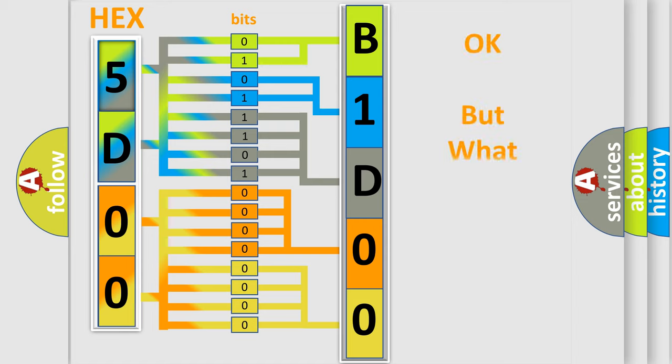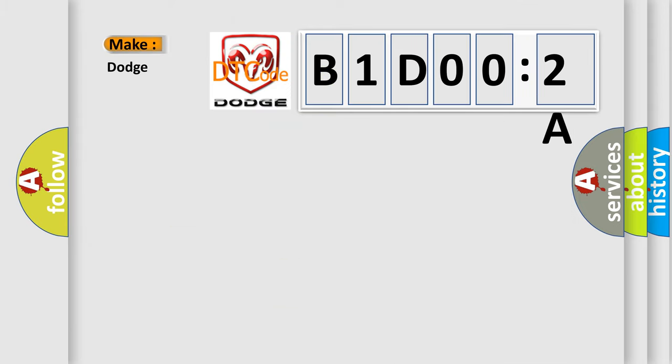The number itself does not make sense to us if we cannot assign information about what it actually expresses. So, what does the diagnostic trouble code B1D002A interpret specifically for Dodge car manufacturers?